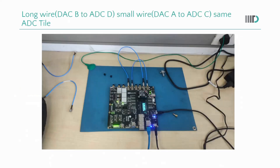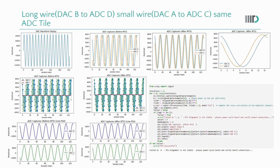In this configuration, we again use wires of different lengths, but both wires go to ADCs on the same tile — ADC-C and ADC-D. The configuration is DAC-B connected to ADC-D and DAC-A connected to ADC-C. As you can see in the plots, after MTS the plots are still not aligned. This is because of the analog delay caused by the different wire lengths — MTS only takes care of digital delay, not analog delay.